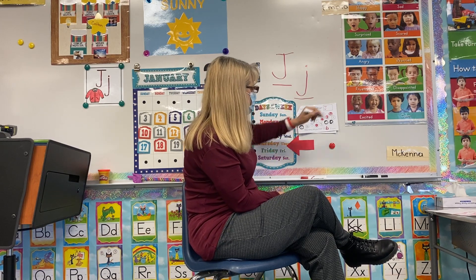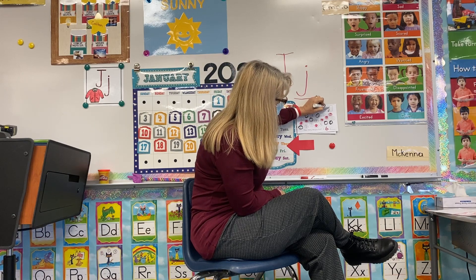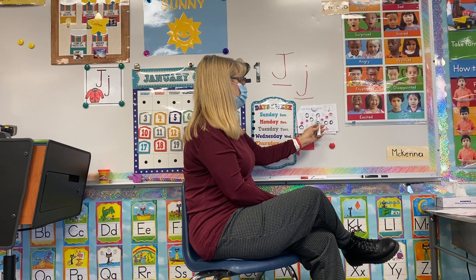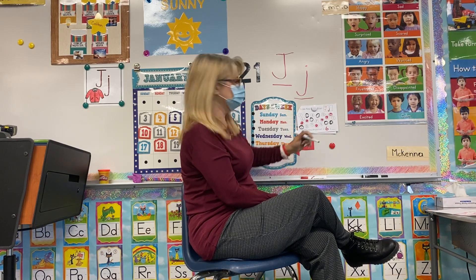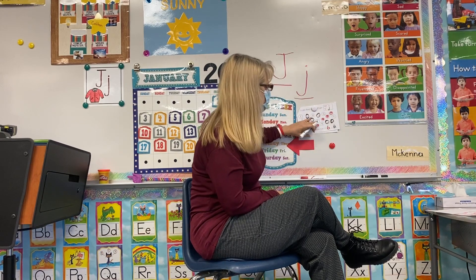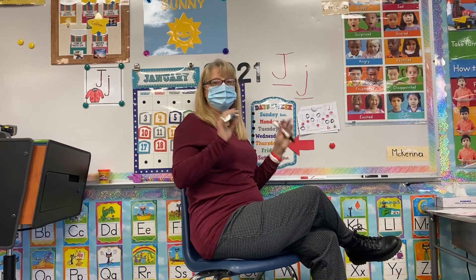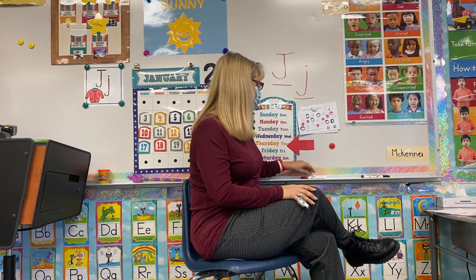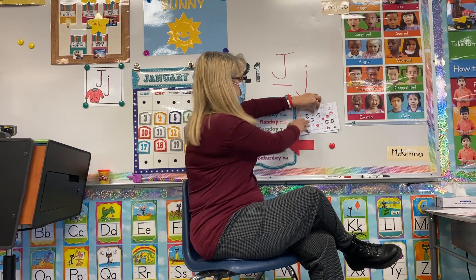Okay, that looks like all of them. So I'm going to write my lowercase j right here, and then I'm going to count them: one, two, three, four, five, six. So there's six lowercase j's. So we're going to draw that right there. Six uppercase and six lowercase — that's the same amount again. We did that the other day.